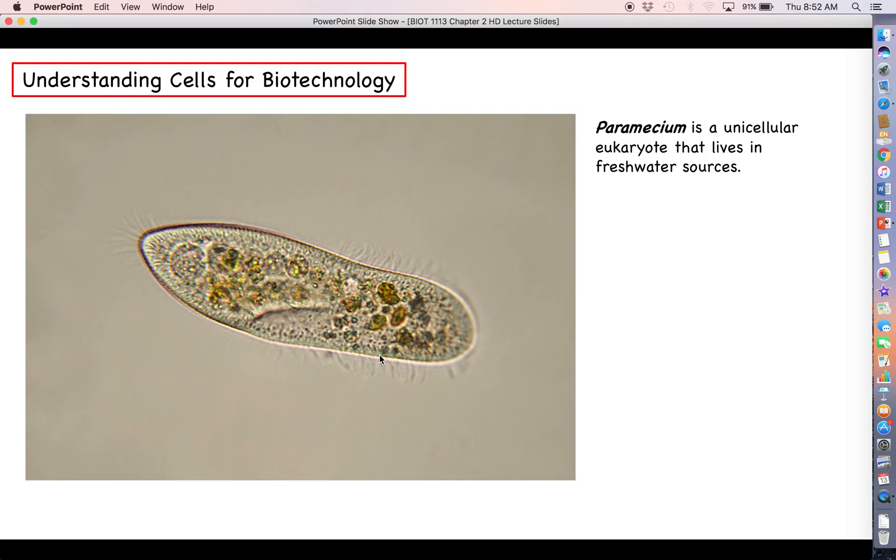This picture from your textbook shows a paramecium cell, an example of a unicellular eukaryote. Unicellular meaning the whole organism is made up of just one cell, and eukaryote is a term we will define later. These organisms live in freshwater sources. If you're working on some biotech application and picked a paramecium as your organism to study or manipulate, we would need to understand a few things about that organism before we really know how to approach our technique.